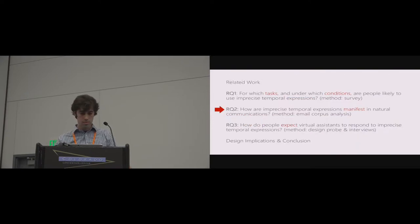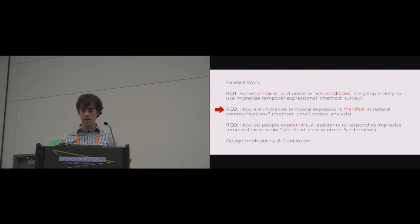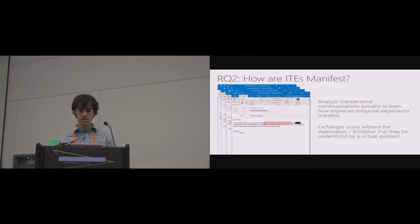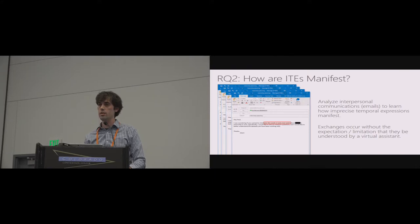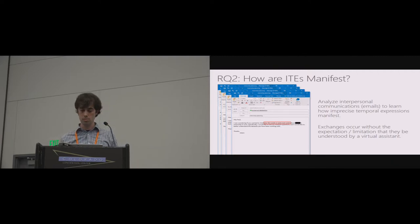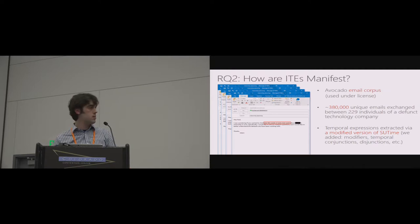The second research question is: how are imprecise temporal expressions actually manifest in natural communications? We analyzed interpersonal communications — corporate emails — to learn how people were expressing time. The nice thing about analyzing an email corpus is that these exchanges occurred between people with no expectation of being interpreted by a virtual assistant, so people felt free to use whatever language seemed appropriate without thinking about the limitations of existing agents. We used the Avocado Email Corpus, which you can license for research purposes.